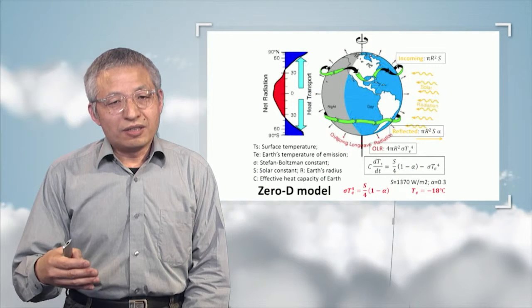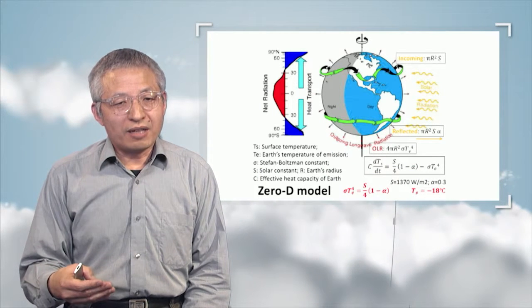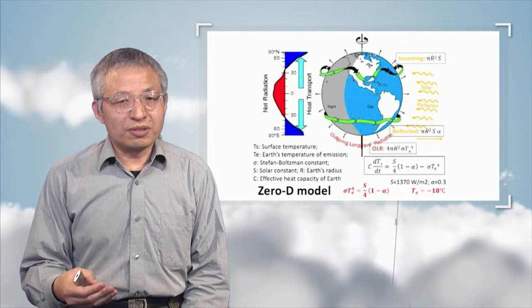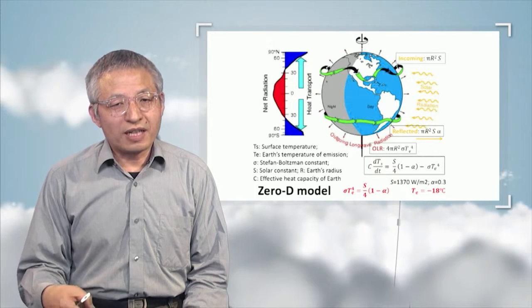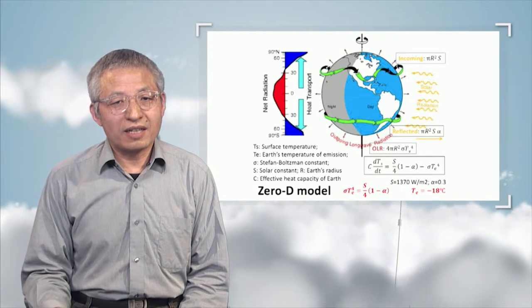On this slide, we see a model, a zero dimension model, a zero-D model. We can then make an average for all of the earth.